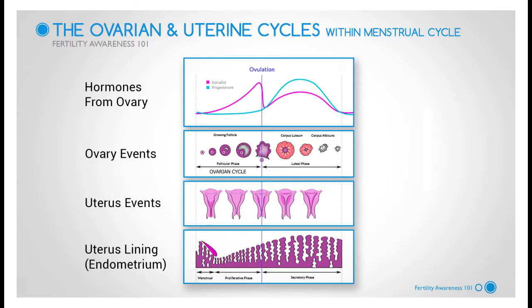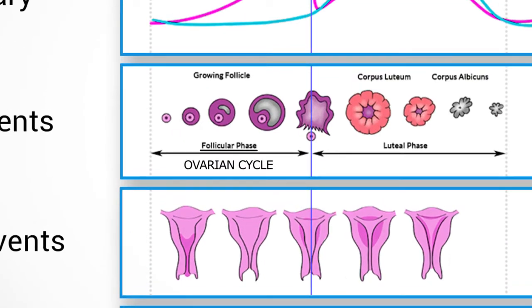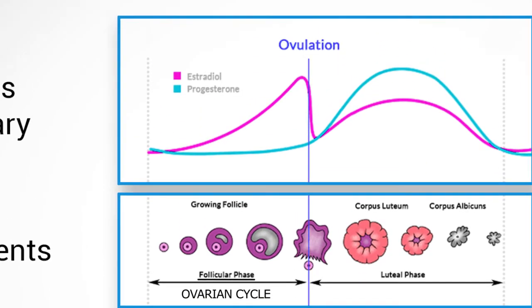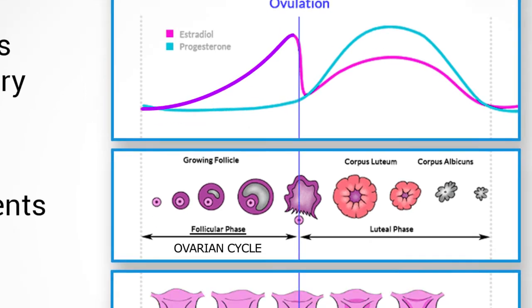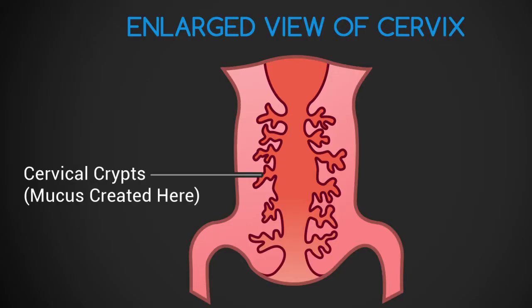The second phase of the uterine cycle is the proliferative phase. This corresponds to the follicular phase in the ovarian cycle, after menses and up until ovulation. During this time, estrogen causes the endometrium, or lining of the uterus, to grow or proliferate. This results in a new lining of the endometrium in the uterus, which prepares the uterus for the implantation and growth of a new baby. Estrogen also stimulates crypts in the cervix to produce fertile cervical mucus, which we will discuss shortly.